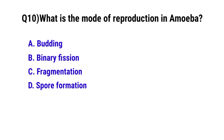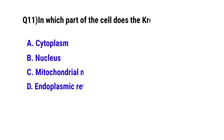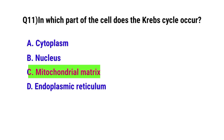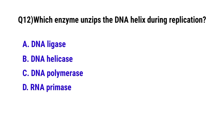Question 10: What is the mode of reproduction in amoeba? The correct option is B: binary fission. Question 11: In which part of the cell does the Krebs cycle occur? The correct option is C: mitochondrial matrix. Question 12: Which enzyme unzips the DNA helix during replication? The correct option is B: DNA helicase.